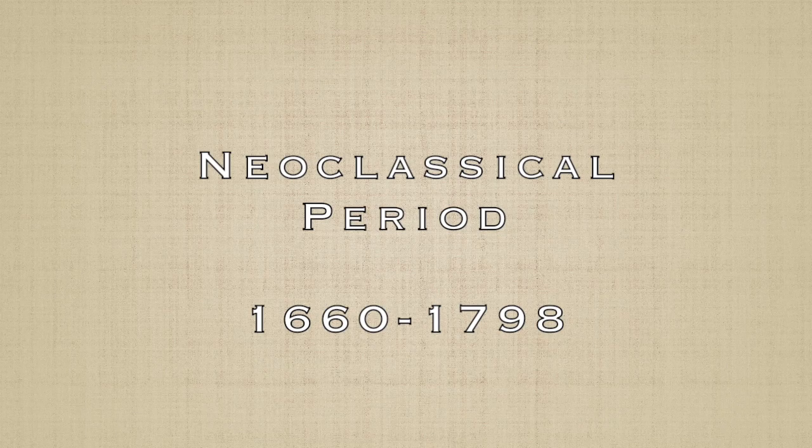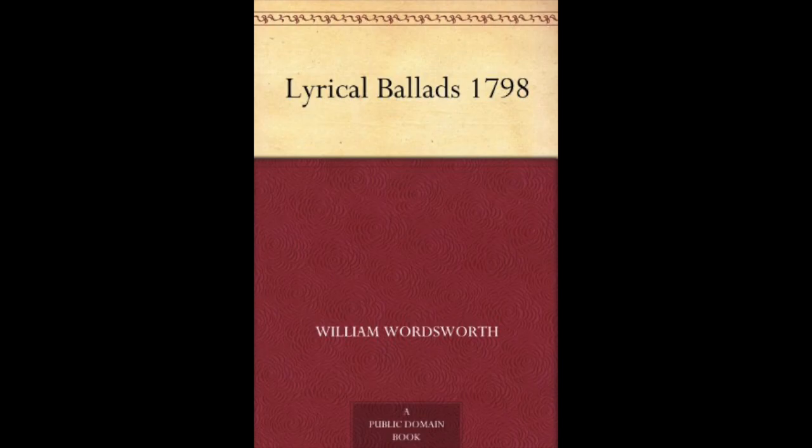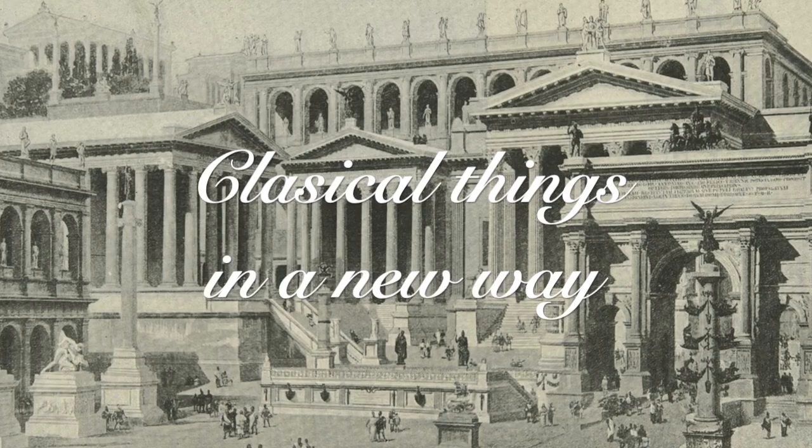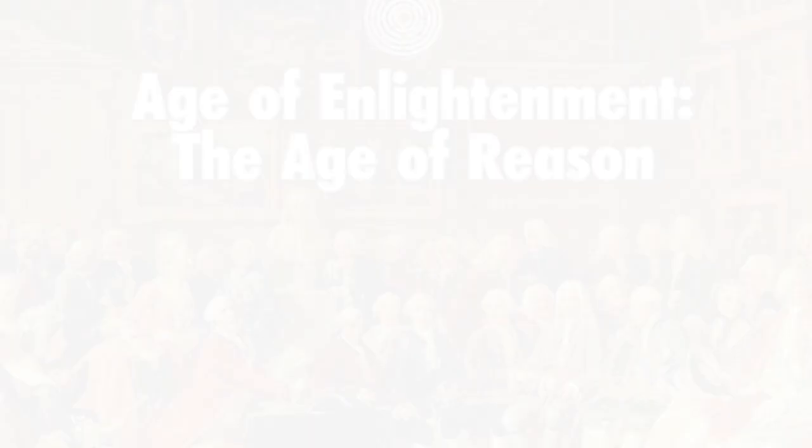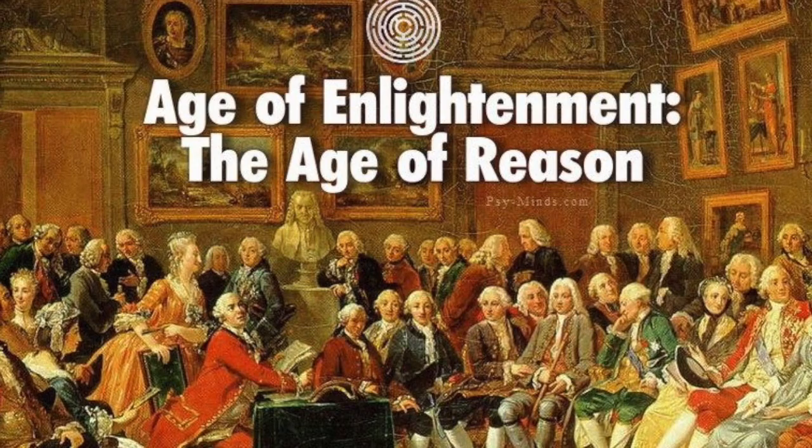Hi! In this video we're going to talk about the Neoclassical period of English literature. The Neoclassical period was from 1660 to 1798, the year when Wordsworth's Lyrical Ballads were published. In this period, people were trying to bring classical things back, like Roman and Greek, but in a new way. The Neoclassical period is also called the Age of Reason, Period of Enlightenment, and Era of Logic.